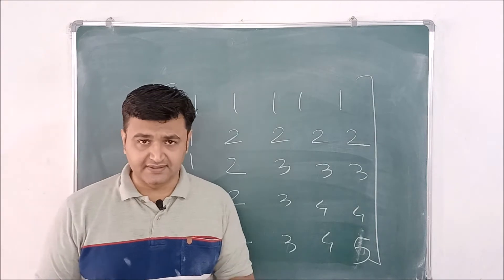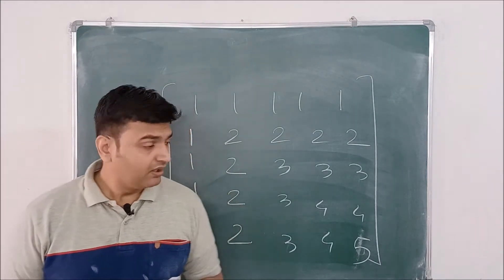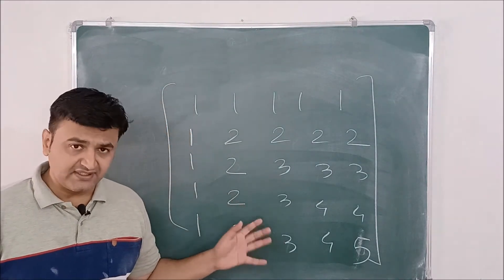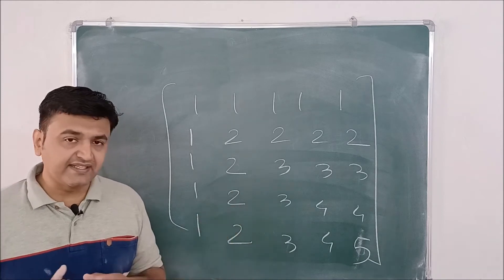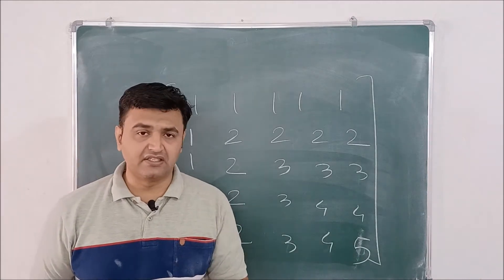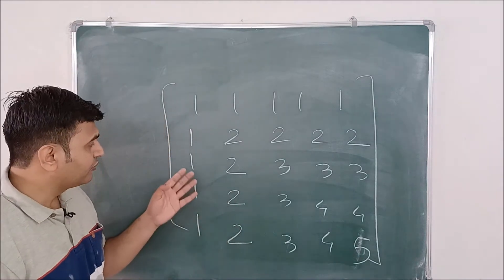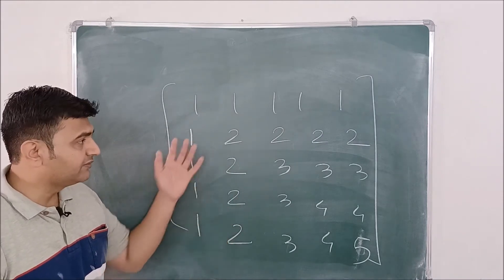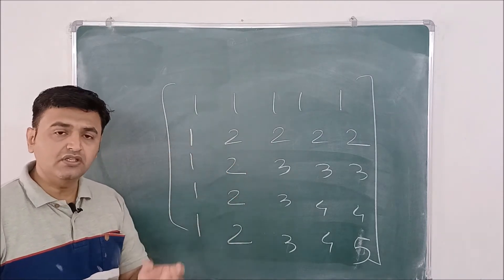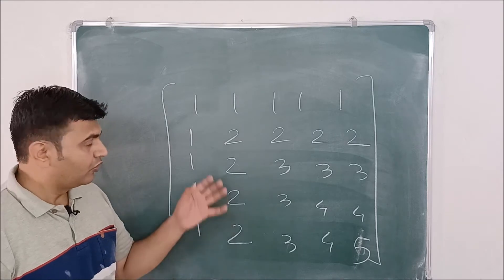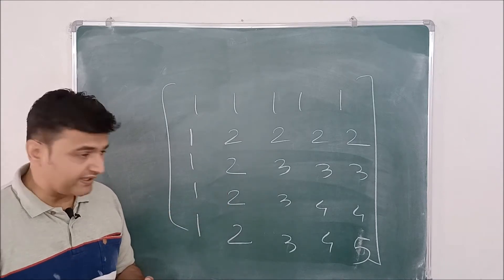Now about the rank I have already discussed and you can see the link in the description. So what's the need of this lecture? Now see, finding rank is not that difficult. Once you see that earlier lecture, you will realize you have to simply do the row operations and reduce this to the row echelon form or the Gauss Jordan form, whichever form you like.